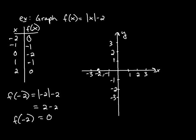x is negative 2, y is 0. x is negative 1, f(-1), or y, is also negative 1. x is 0, y is negative 2. x is 1, y is negative 1. And x is 2, y is 0 right here. Now we'll go ahead and draw a graph through these points.